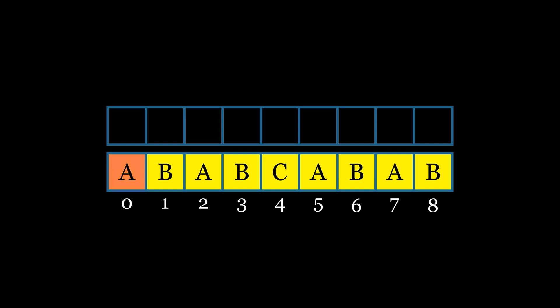In this pattern, the first letter A does not have any prefix or suffix, so the value in the LPS table for this position will be 0. B also doesn't have any matching prefix, so its position in the LPS table will also be 0. The next A does have a matching prefix, which is the first letter A, so its value in the LPS table will be 1.